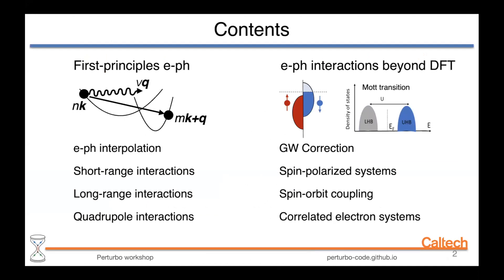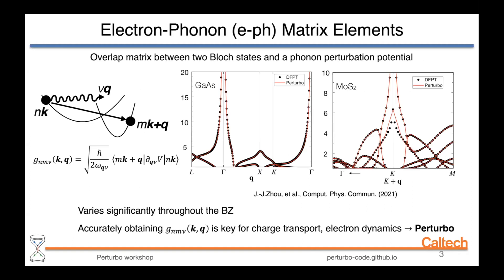In this lecture I'll talk about two main topics. The first is the first principles electron-phonon interaction itself — how we do electron-phonon interpolation, short-range and long-range interactions, and quadrupole electron-phonon interaction. In the second part I'll talk about electron-phonon interactions beyond normal density functional theory: GW correction, spin-polarized systems, spin-orbit coupling, and even correlated electron systems.